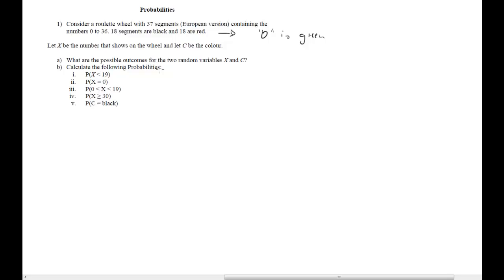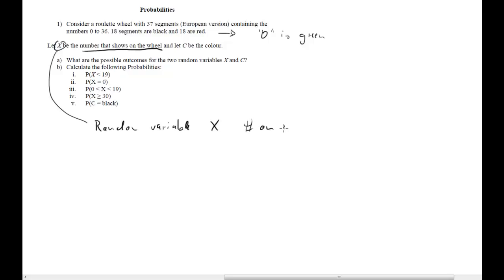So now we create a new random variable. X is going to be a random variable defined as the number that shows on the wheel — the field where the ball comes to rest. We will also use a second random variable, we call that C, and that is going to be the color on the wheel.